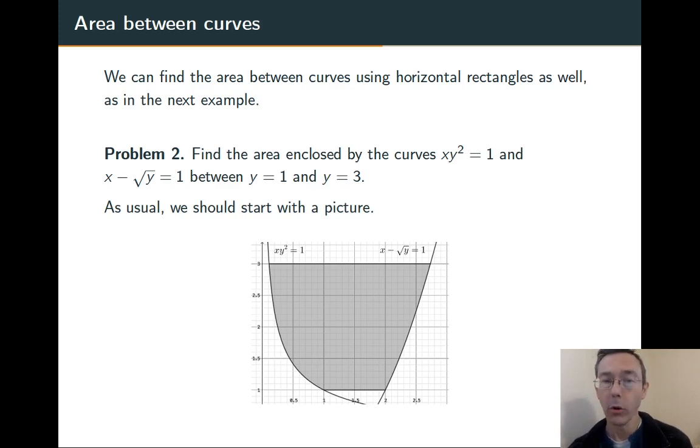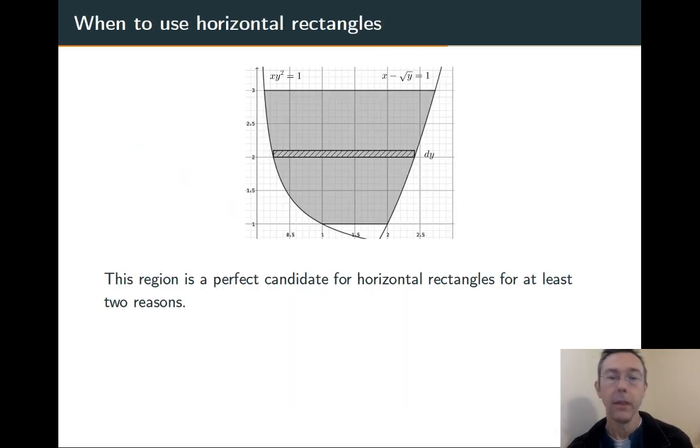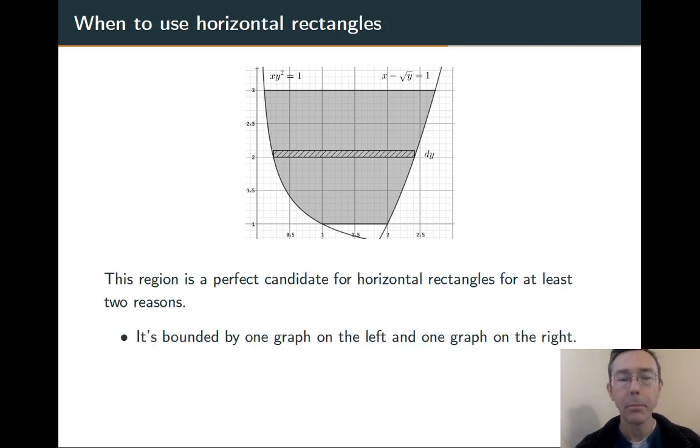Okay, so we're viewing this from the horizontal perspective. We're going to draw a horizontal rectangle. Now, this is a really good candidate for horizontal rectangles for several different reasons. First of all, notice that instead of a top curve and a bottom curve, we really have a right curve and a left curve. If we were to try and do it with top curve and bottom curve, we would have to look at different regions and see where the top curve and bottom curve change over that interval.